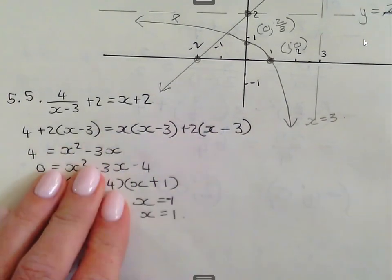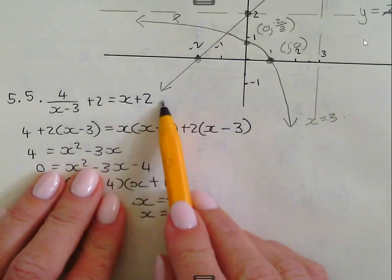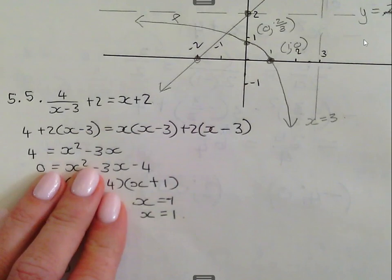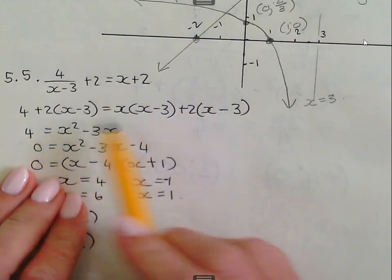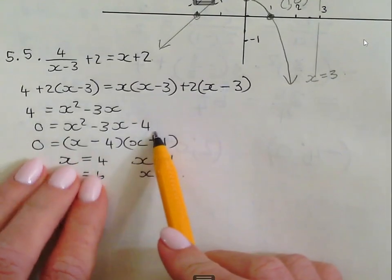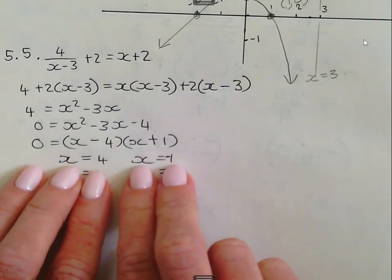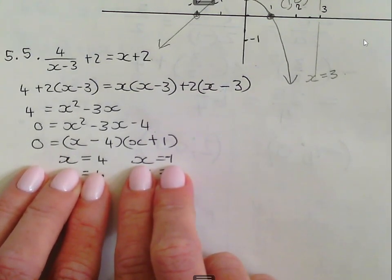That one would become 2 bracket x minus 3, x bracket x minus 3, and then again 2 bracket x minus 3. But because they're the same, they don't play a role. Then I have 4 equal to x squared minus 3x. Get everything on the same side, factorize, then you get your two x answers: x equal to 4 and x equal to negative 1.